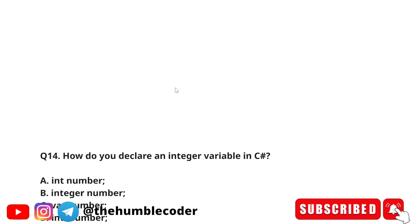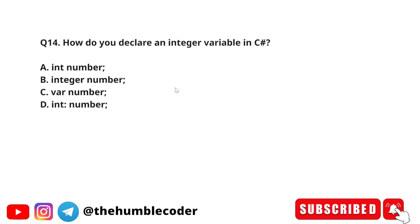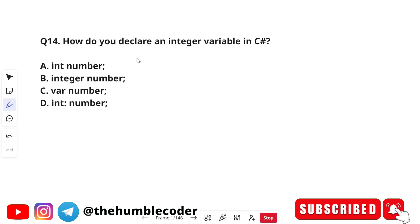How do you declare an integer variable in C sharp? The options are: A) int number, B) integer number, C) var number, or D) int colon number. The correct answer is option A — int number. To declare an integer variable in C sharp you use the syntax: int number.